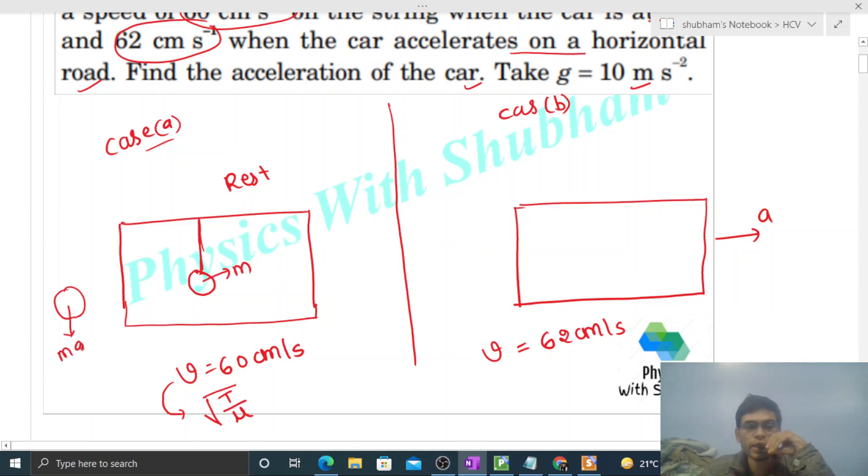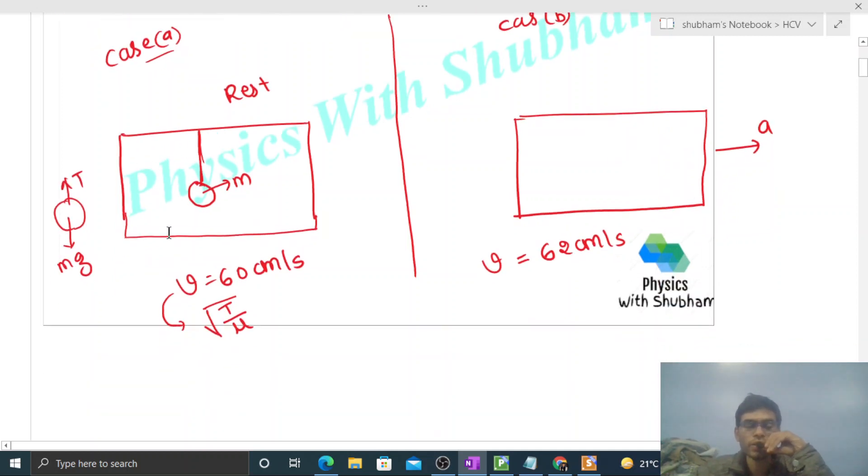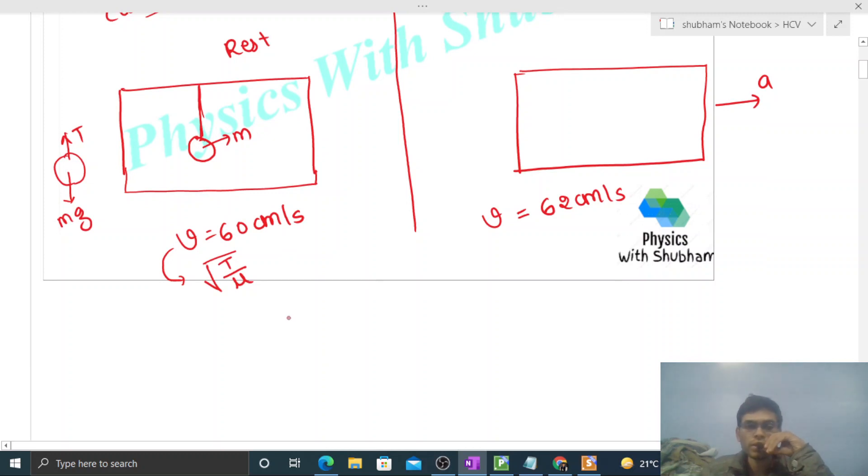So downward direction, its weight will act which will be balanced from the tension in the string. So tension value will be mg. So this will be under root of mg divided by mu, where mu is the linear mass density of this string. That is given 60.